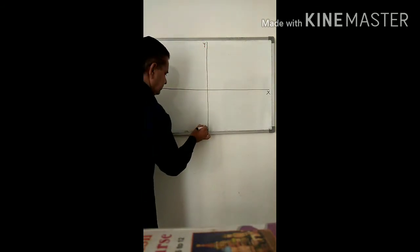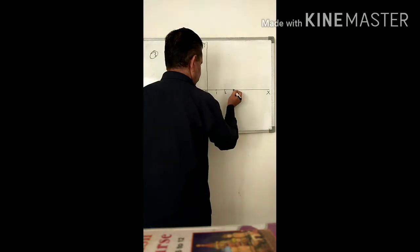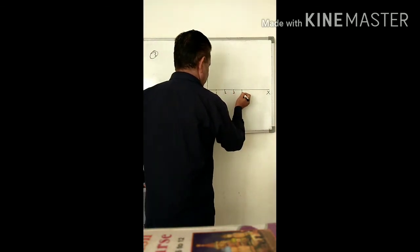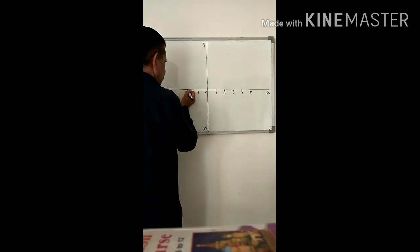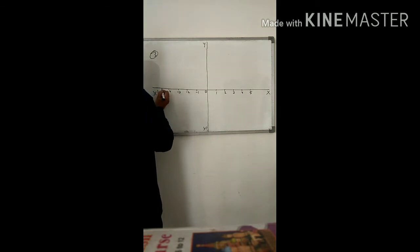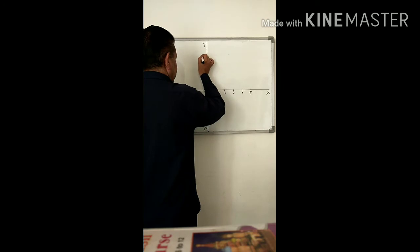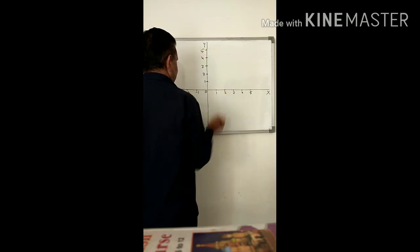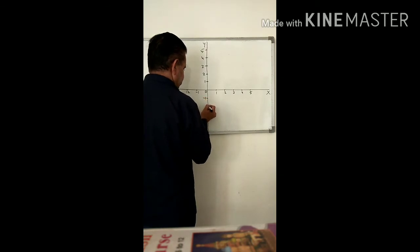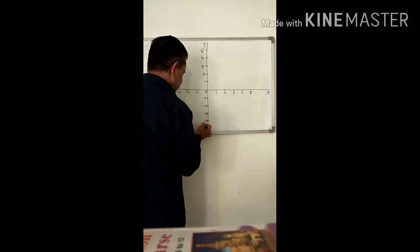This is x, this is x-dash, this is y, and this is y-dash. Origin 0. Positive x values: 1, 2, 3, 4, 5. Negative x values: minus 1, minus 2, minus 3, minus 4, minus 5. Positive y values: 1, 2, 3, 4, 5. Negative y values: minus 1, minus 2, minus 3, minus 4, minus 5.